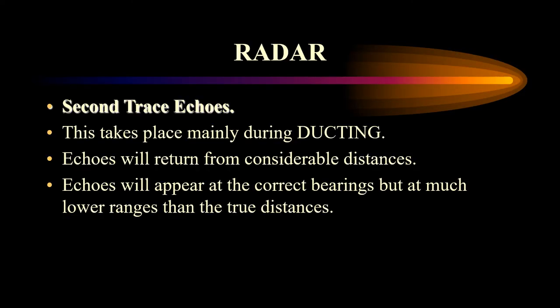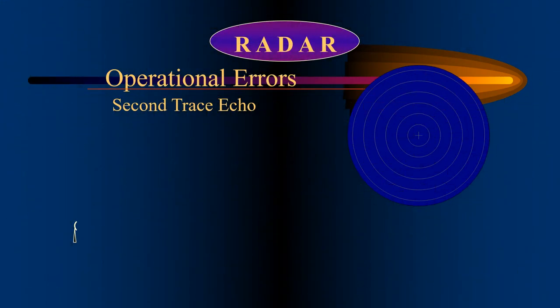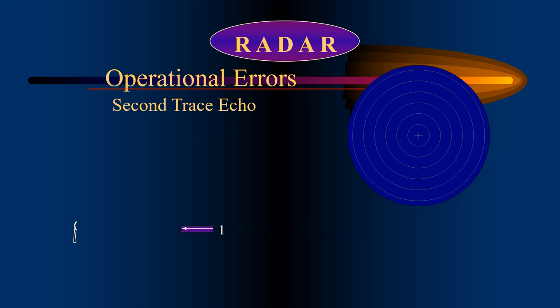Second trace echoes: the condition called ducting can result in echoes returning from considerable distances. These echoes will appear at the correct bearing but at much lower ranges than the true distance. What can happen is that an echo from the first pulse can arrive back at the scanner after the transmission of the second pulse. So you can see the second pulse going from the scanner while the echo from the first pulse is being received back by the scanner.